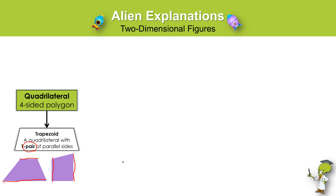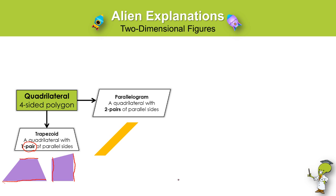Now if a quadrilateral has two pairs of parallel sides, we call that the parallelogram. It's kind of easy to remember — if it's all parallel then it's a parallelogram, and it has two pairs of parallel sides. Here is one of the pairs in my example, and here is the second pair in my example.